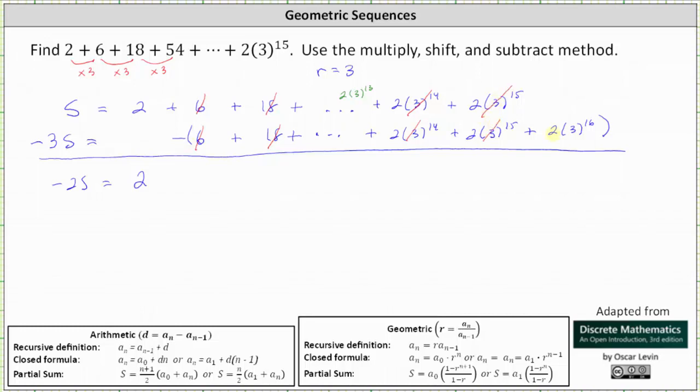But then we still have minus 2 times 3 the 16th, which gives us the equation negative 2s equals 2 minus 2 times 3 the 16th.